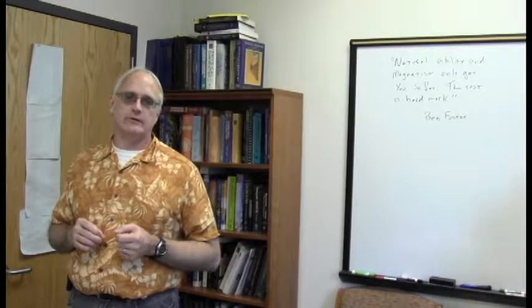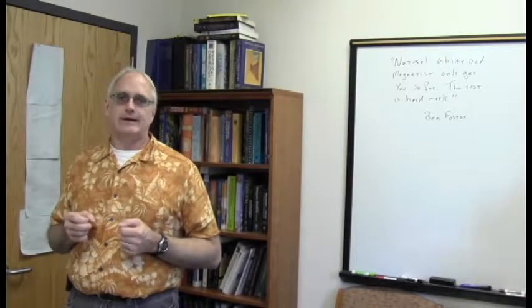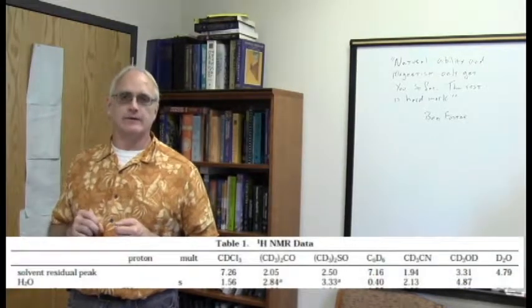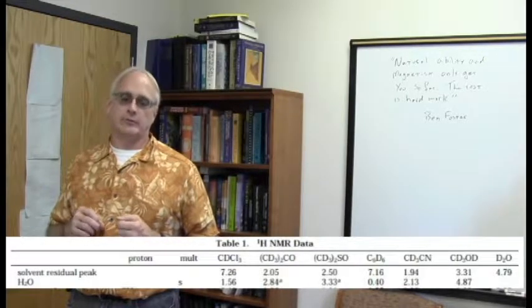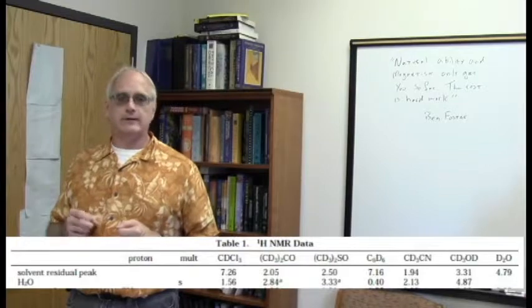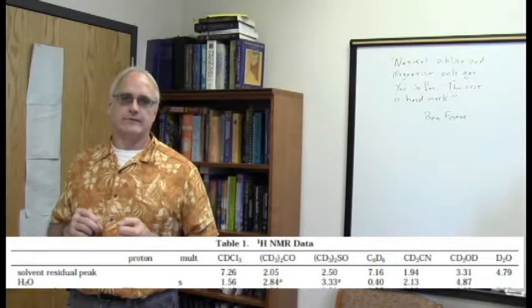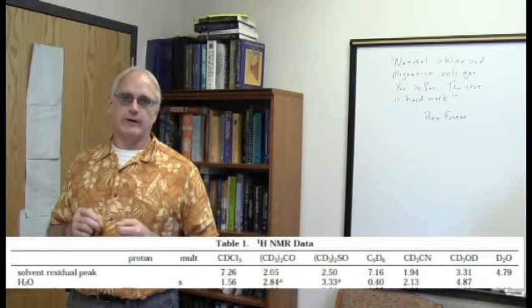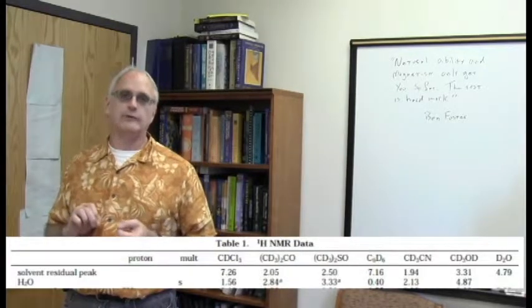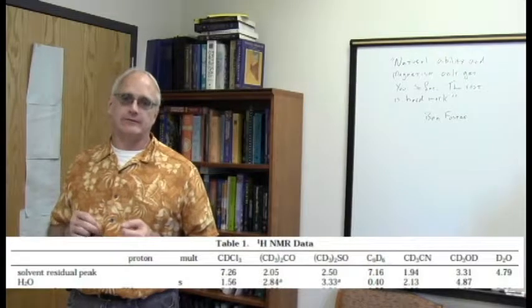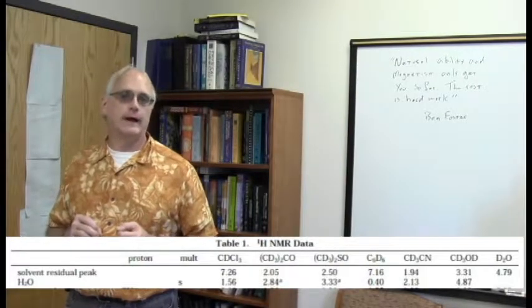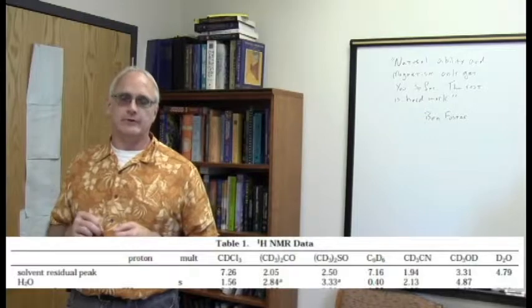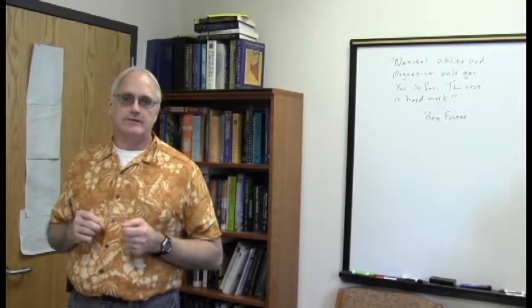It's called the residual solvent signal. You've actually seen that on the table I took from that Journal of Organic Chemistry article that I showed in the previous video. There I was calling your attention to the position of water in various solvents. Here it is again. And notice this line labeled residual solvent signal. For example, that trace of CHCl3 in a deuterated chloroform bottle, that 0.1 or 0.2% that's in there, will show up as a peak at 7.26 ppm. Notice how strongly downfield that is because of the three electronegative chlorines attached to the same carbon that bears the proton.